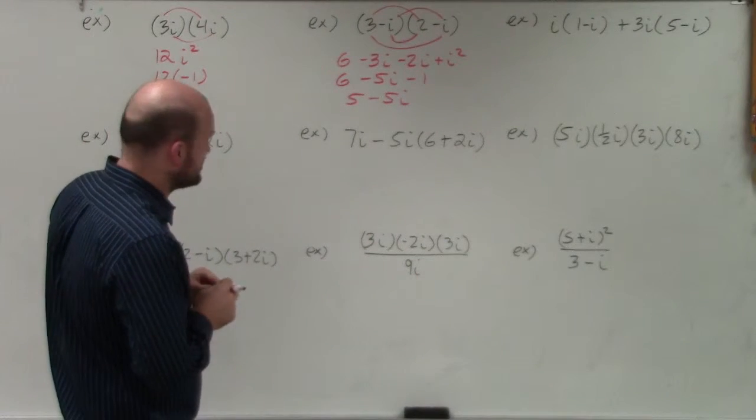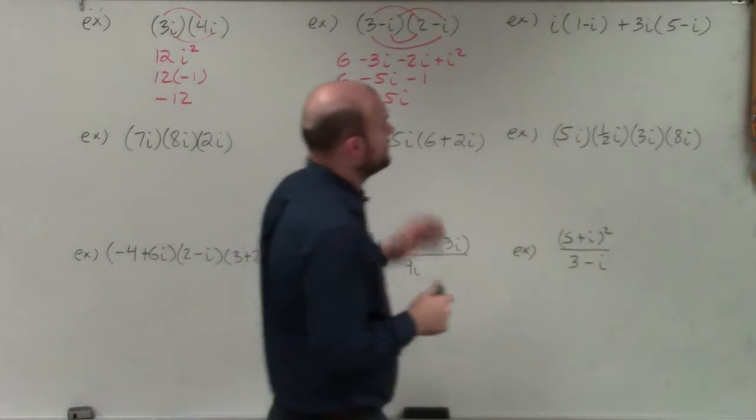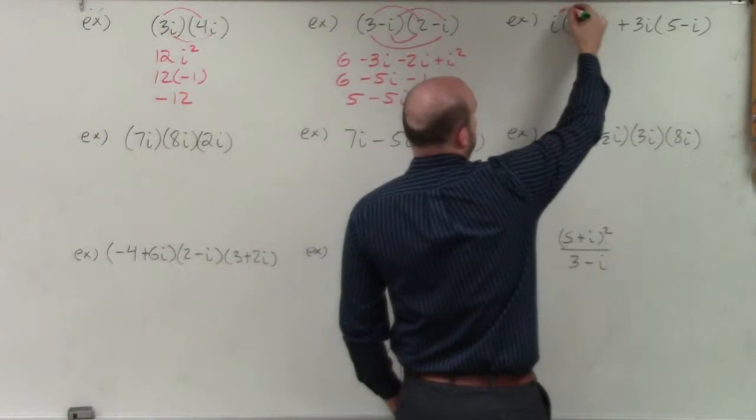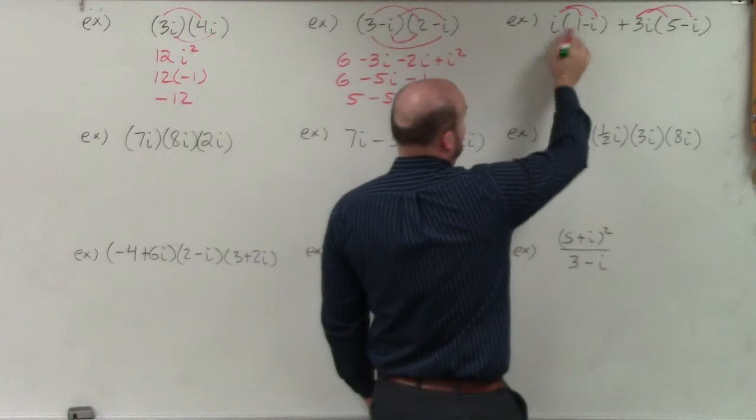Remember, we always want to write our answer in the form a plus bi — the complex form. That's important. So in this next example, I'm going to have to apply some distributive property and then combine my terms.